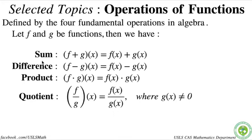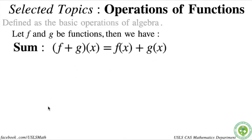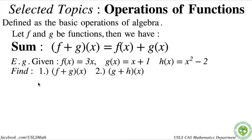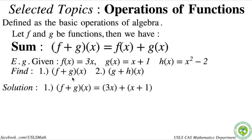So we're going to first cite some examples in sum. Given f of x equals 3x, g of x equals x plus 1, and h of x equals x squared minus 2, for number 1 and number 2 we are asked to find f plus g of x and g plus h of x. For number 1, f plus g of x equals f of x plus g of x. So first we copy f of x, which is 3x, then plus g of x, which is x plus 1.